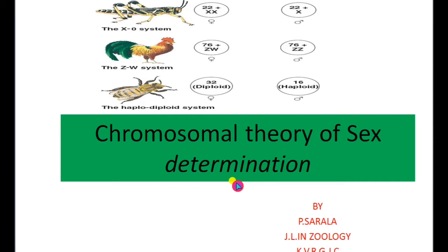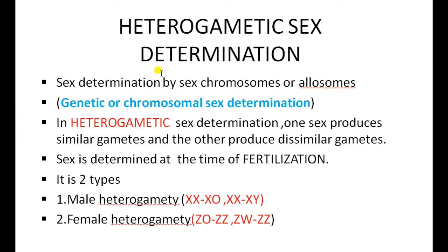Today we are going to learn about chromosomal theory of sex determination. The chromosomal theory of sex determination depends mainly upon the sex chromosomes or allosomes. That is why this type is known as genetic or chromosomal sex determination, where allosomes play an important role in determination of sex.